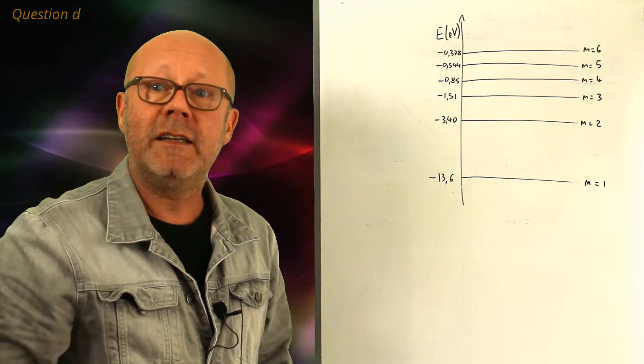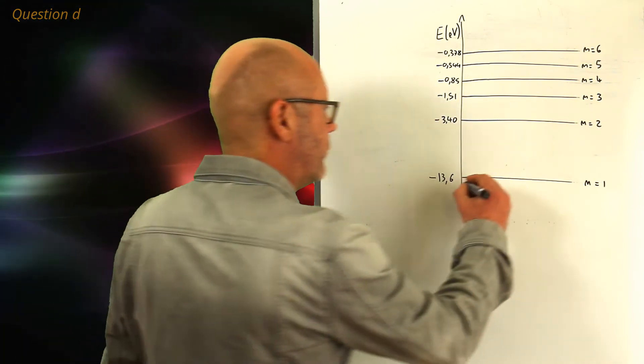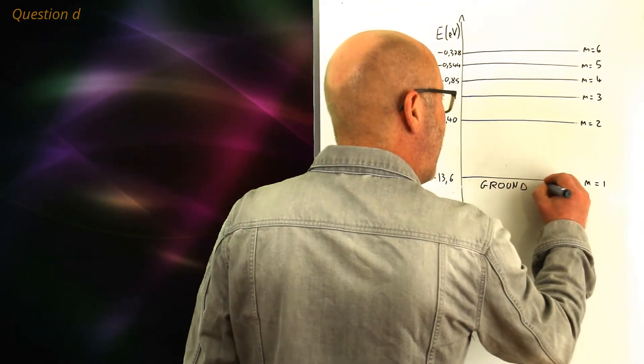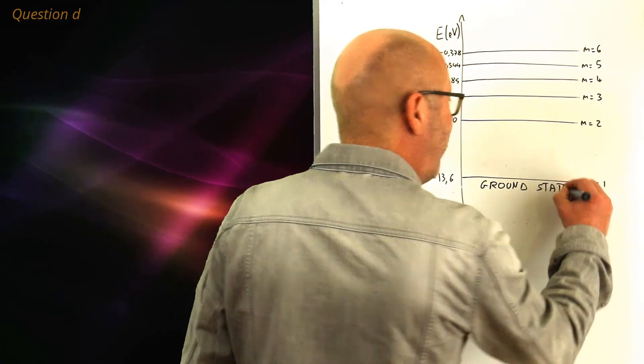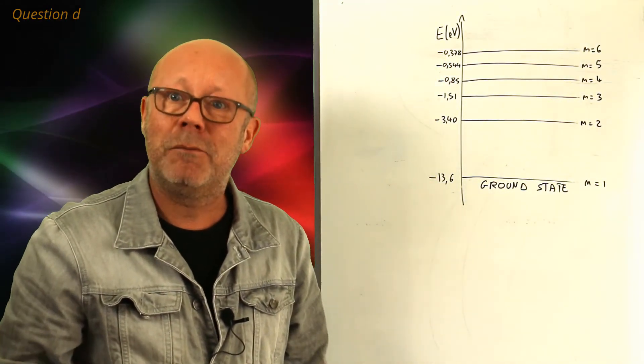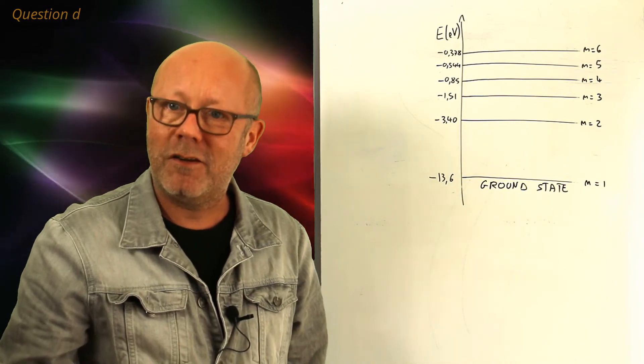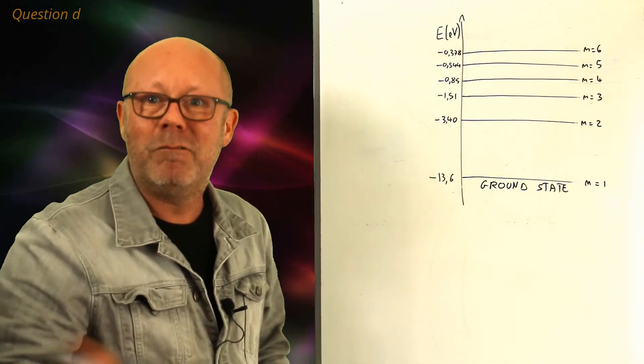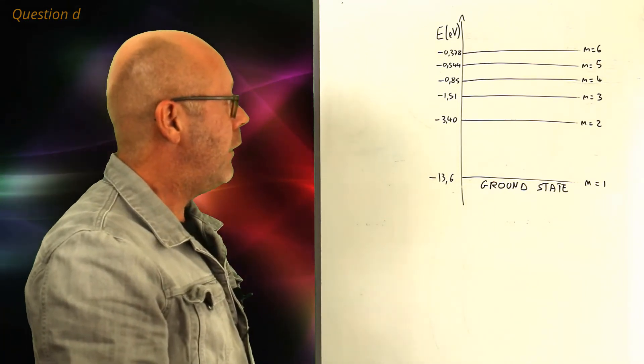We say that the atom is in its ground state. Why ground? Well, when you have an object on the ground, it cannot fall further, right? When you have an object on the ground, it has its minimum gravitational potential energy. Well, this is an analogy, if you wish, with simple mechanics.